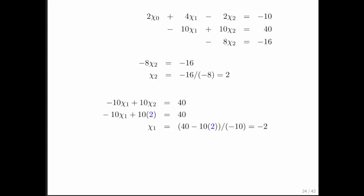So then we know what chi2 and chi1 are. We take the first equation. We fill in what chi1 and chi2 are. We end up with one equation in one unknown. We solve that for chi0. And we have our solution. And then we could write our solution as a vector by saying it's this vector 1 minus 2, 2.